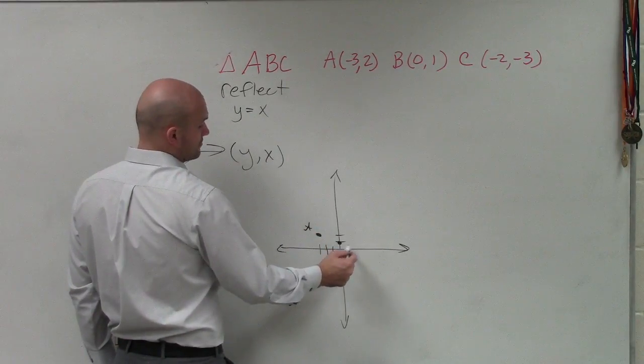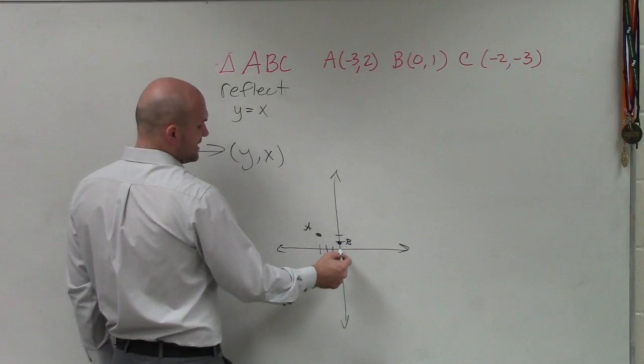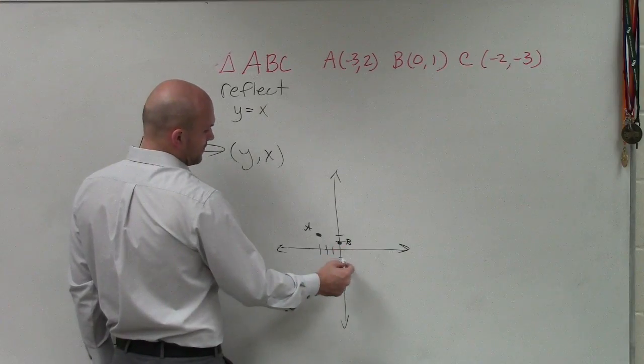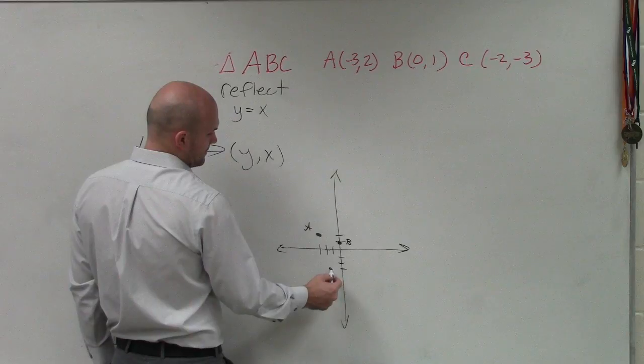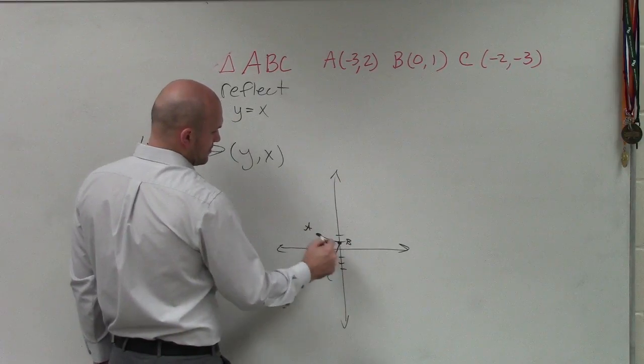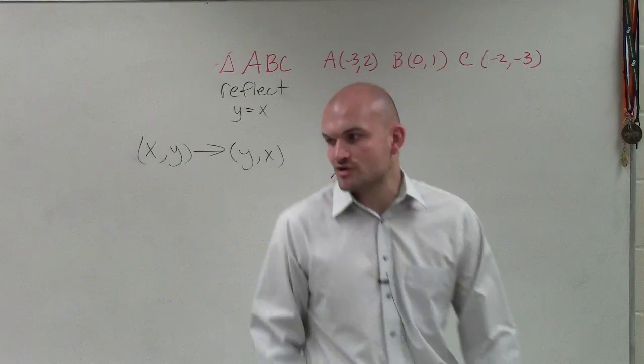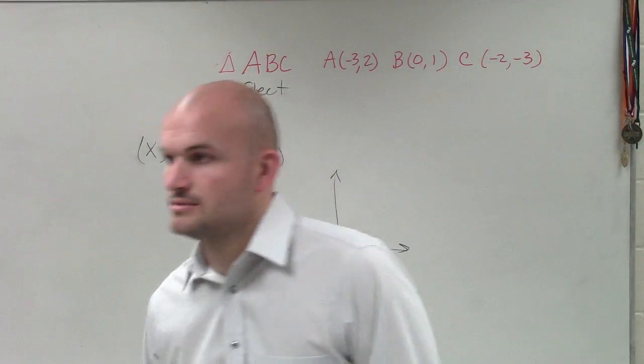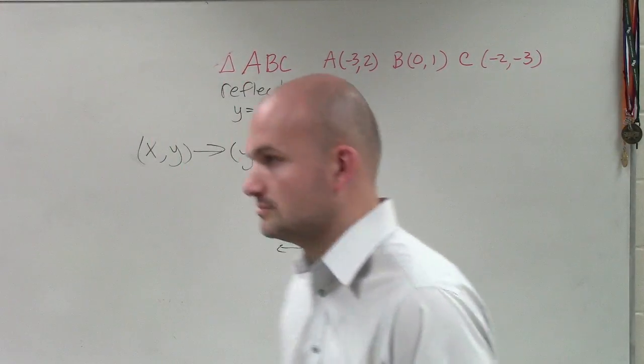I have B, which is at (0, 1). And then I have C, which is at (-2, -3). OK. So you guys can see we have a triangle here. Good triangle.